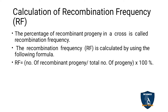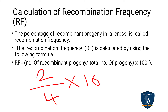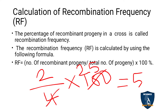The recombination frequency can be calculated using the formula: RF = (number of recombinant progeny / total number of progeny) × 100%. For example, if 4 progeny (daughter cells) are formed and 2 are recombinant, then RF = 2/4 × 100 = 50%. That is, the recombination frequency is 50%.